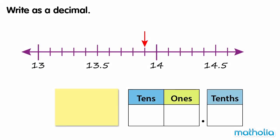Write as a decimal. The red arrow is pointing to a number on the number line between 13 and 14. Each step on the number line shows one-tenth.